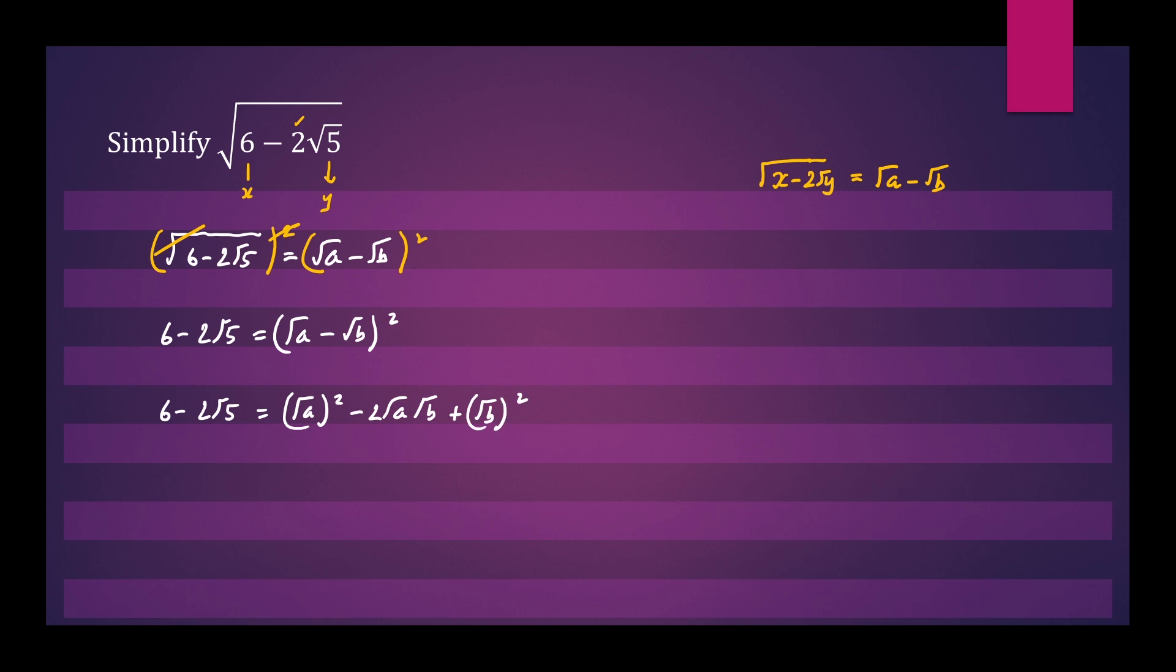We'll now simplify the right side. We have 6 minus 2 root 5 again equals root a squared is a, we have root b squared which is b, so I'll group these two together. And in the middle term we have minus 2 root a root b, we'll write that as minus 2 root ab.